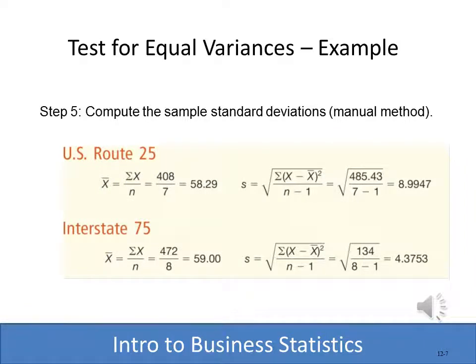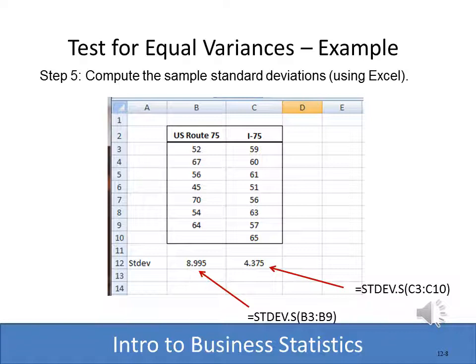Computing the F statistic is easy — it's just the variance of sample one divided by the variance of sample two. The next step is to compute the standard deviations and from there get the variance. This can be done manually as the sum of squared differences divided by n minus one, which gives the variance; take the square root for the standard deviation. I prefer using Excel's STDEV.S function, since these are samples rather than populations.